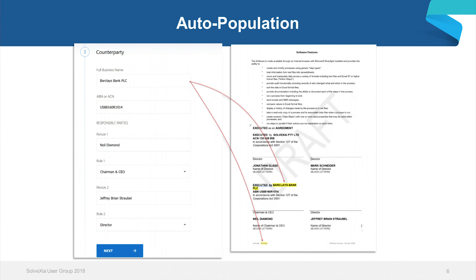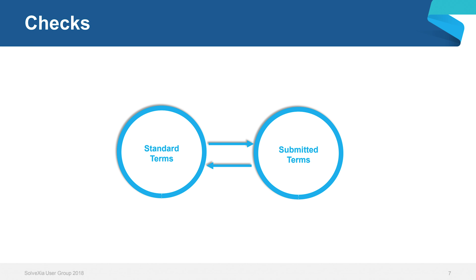Auto-population allows for more standardization of the process — it takes mundane, repetitive tasks away from staff and ensures a consistent, error-free draft. We also have checks, which provide a simpler and time-efficient way to condense the most important elements of your contract and check them against standard terms. For example, if your business is used to signing two-year term deals but a new client insists on a one-year contract, you can set the process so that this deviation is highlighted.